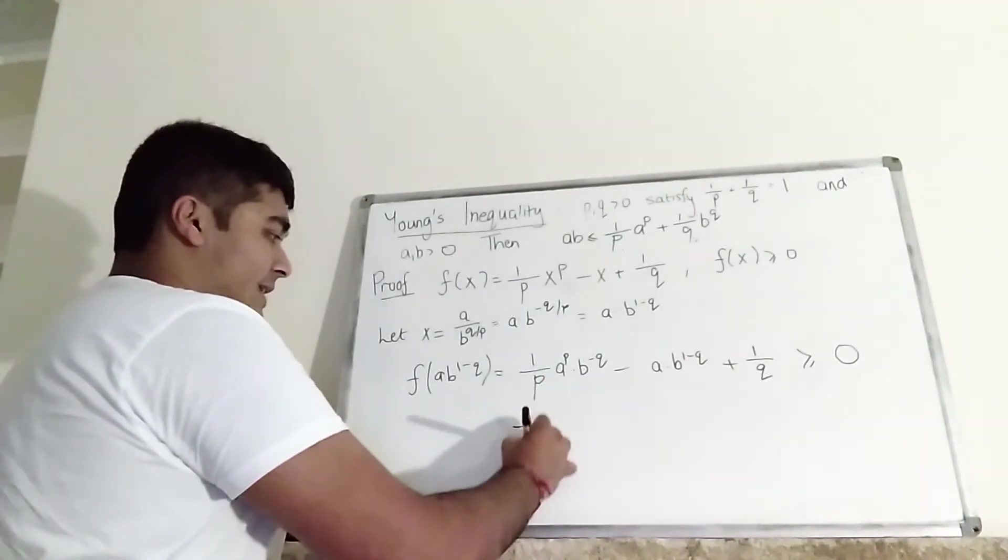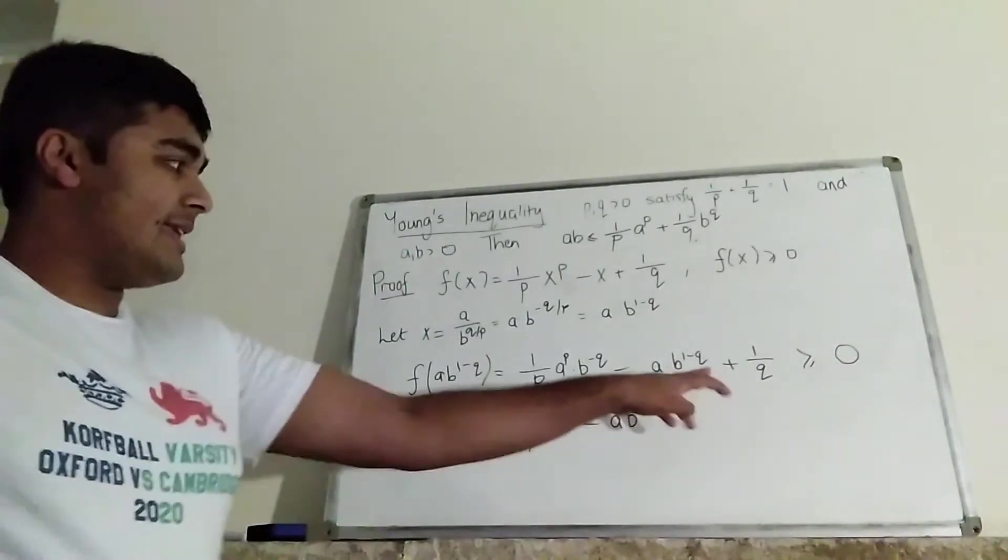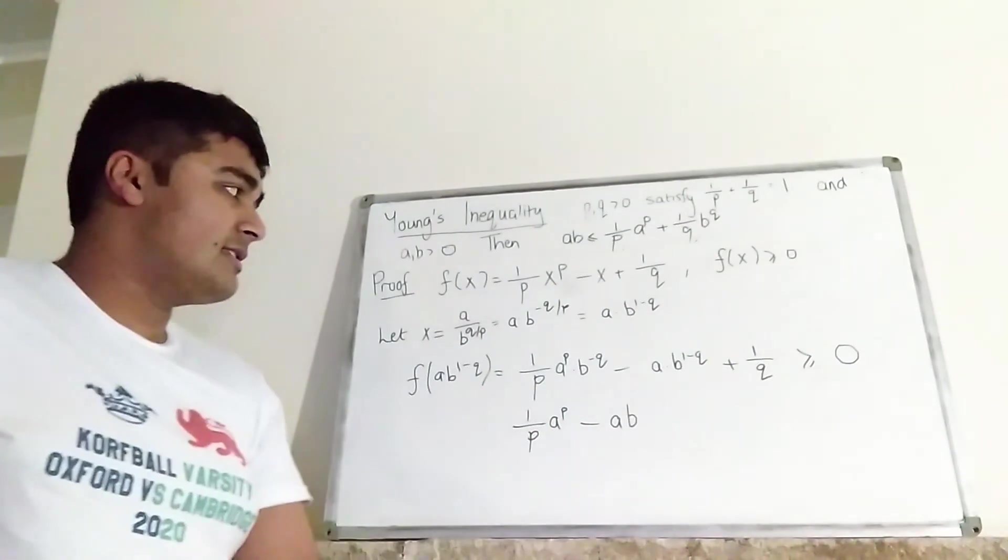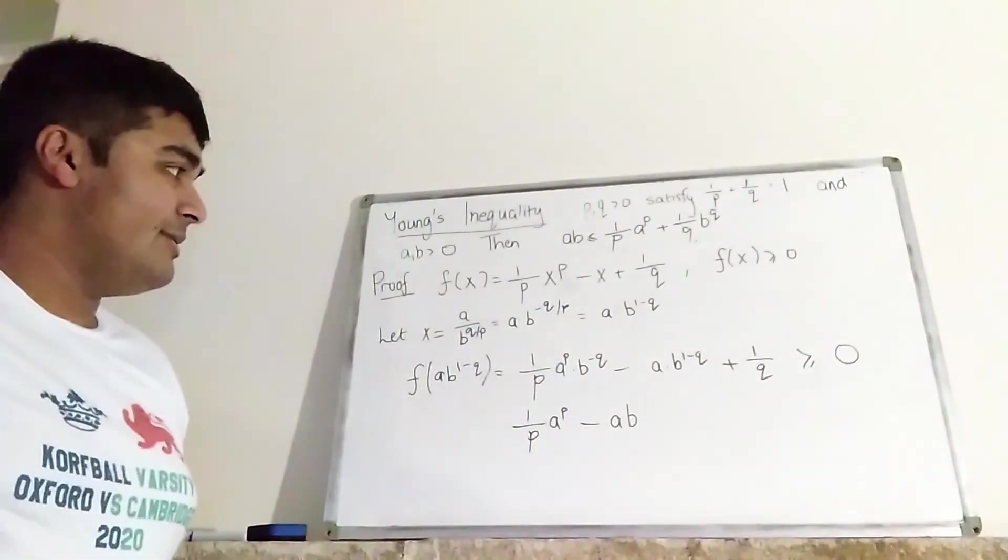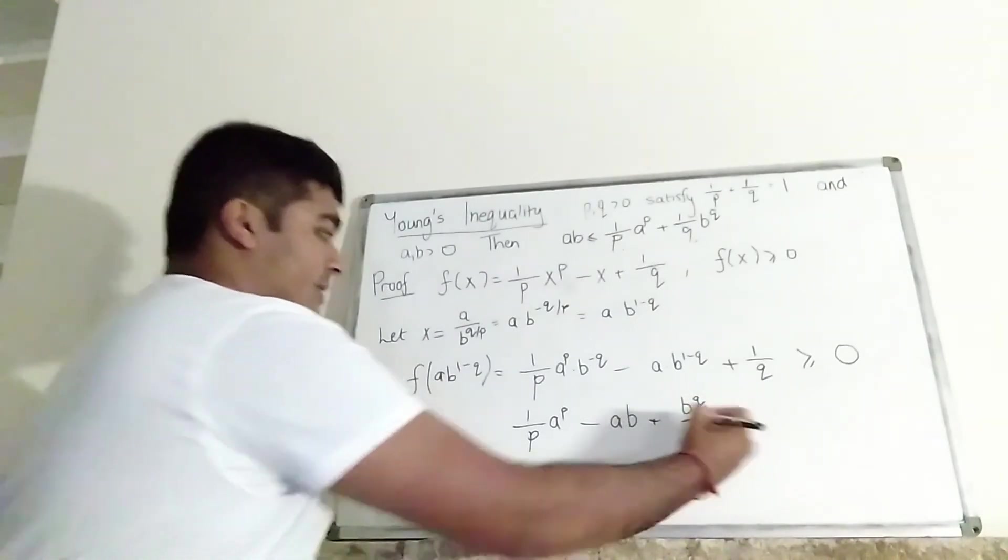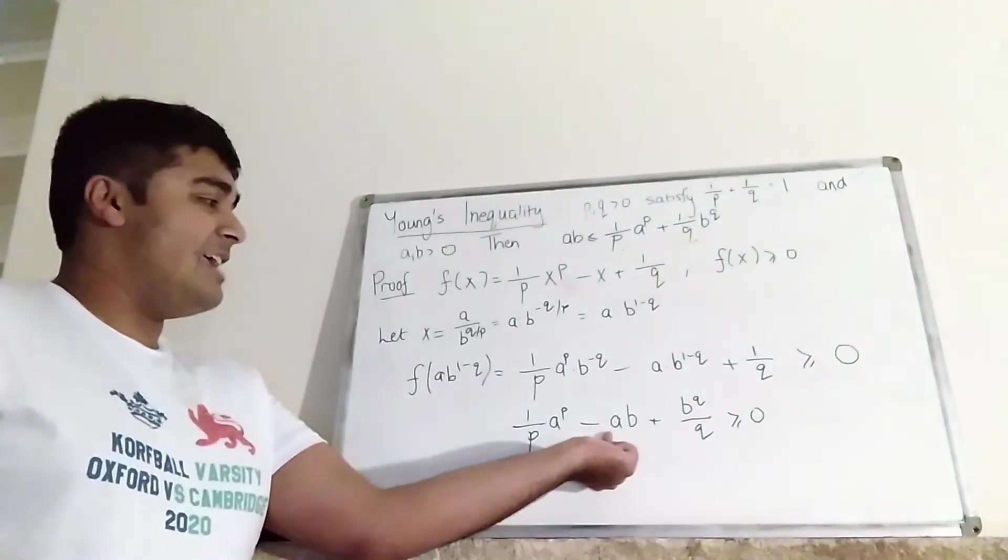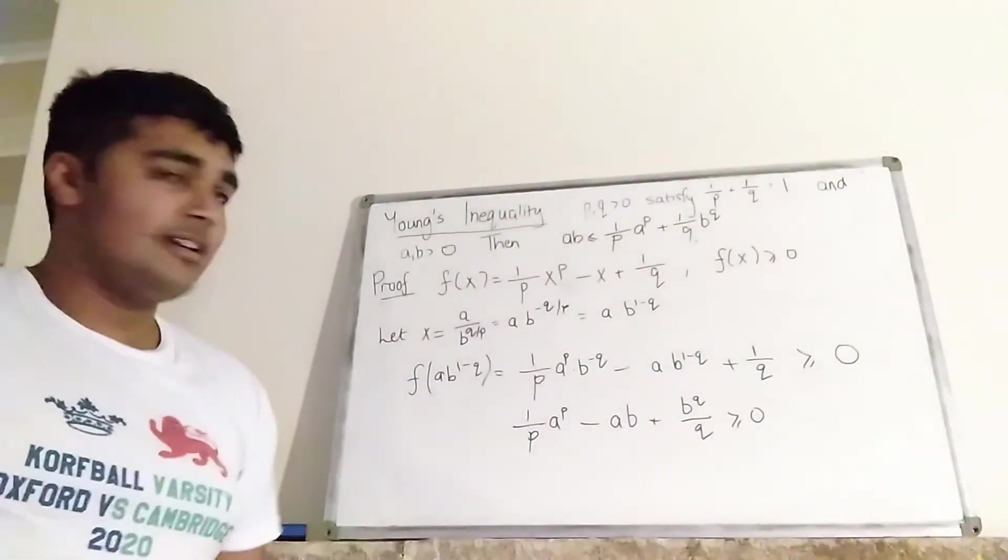So here we get 1 over P times A to the P minus A times B. Because that thing there is B times B to the minus Q. And I'm multiplying through by B to the Q. And then I've got plus B to the Q over Q. And that's greater than or equal to 0. And now it's just a very simple thing of adding A, B to both sides. And I get Young's inequality.